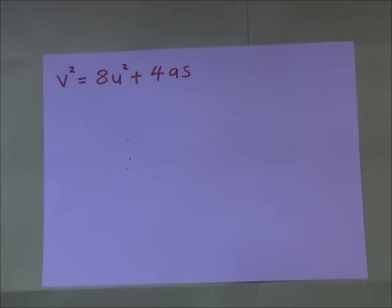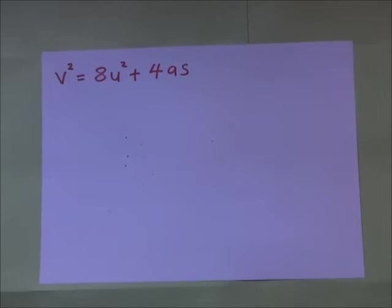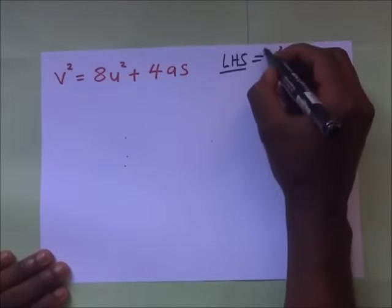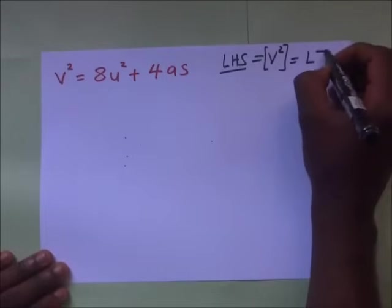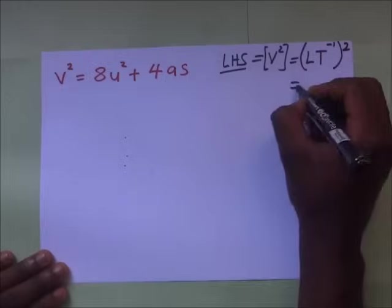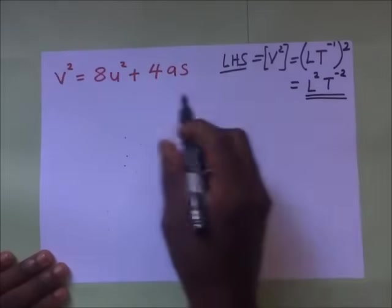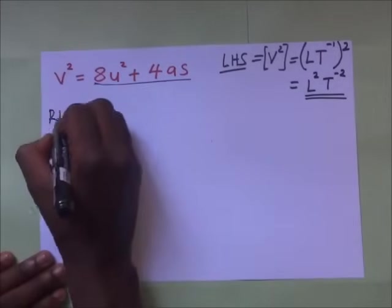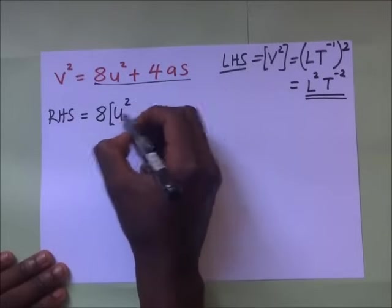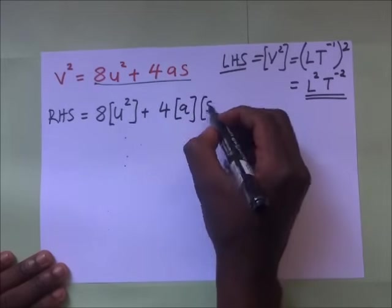We'll do one more example: V² = 8u² + 4as. We are checking for dimensional consistency. The left-hand side is V², and since the dimensions of velocity are LT⁻¹, the dimensions of V² are (LT⁻¹)² = L²T⁻². On the right-hand side we need the dimensions of 8u² plus 4 times the dimensions of acceleration times the dimensions of s.